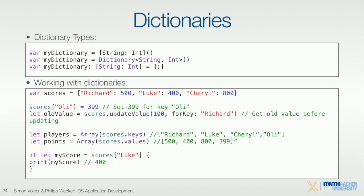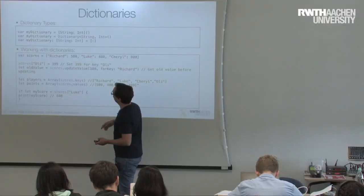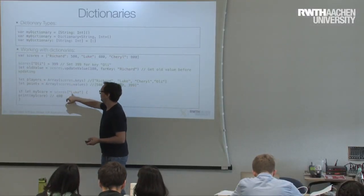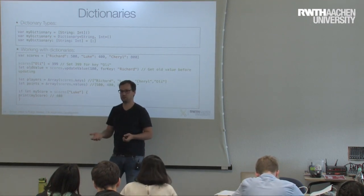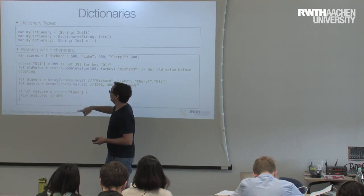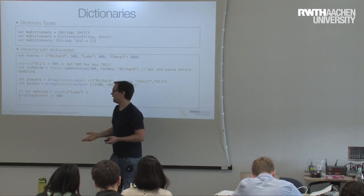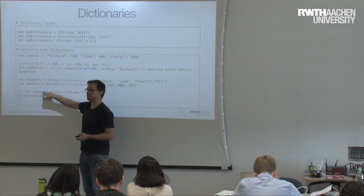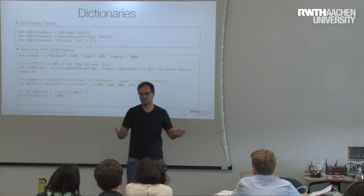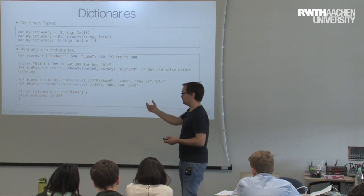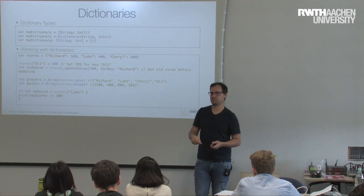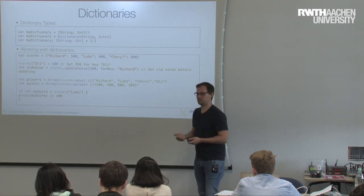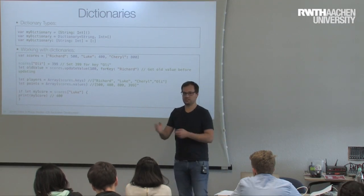When you ask a dictionary for a key that doesn't exist, you can use an if condition that creates a constant and searches for it — this is only true if the key exists. So if Luke is in the dictionary, this will exist; otherwise the if statement is false and it skips over. Basically you do an if statement and create a constant at the same time. This is a typical concept in Swift for asking whether a certain value exists.